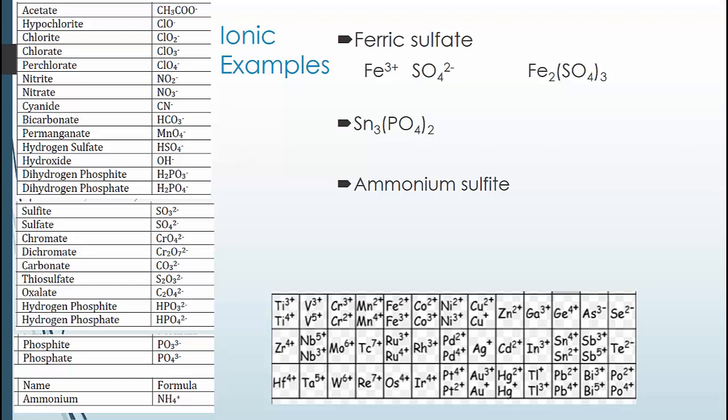For the next one, we will notice that this is the plus 2 version of tin, which is the lower charged version. We then have a phosphate ion. So, when we combine these, we can get two different answers. Tin 2 phosphate, if you want to do it with the Roman numerals, or use the OUS ending to give us stannous phosphate.